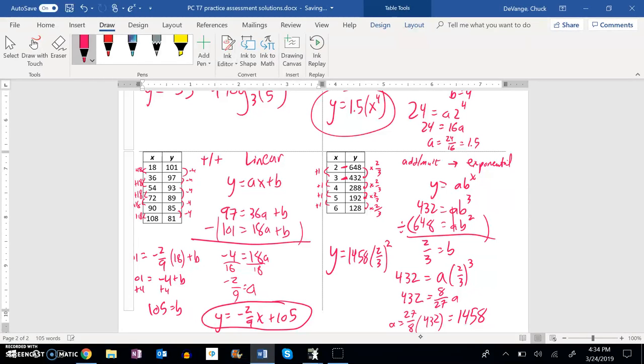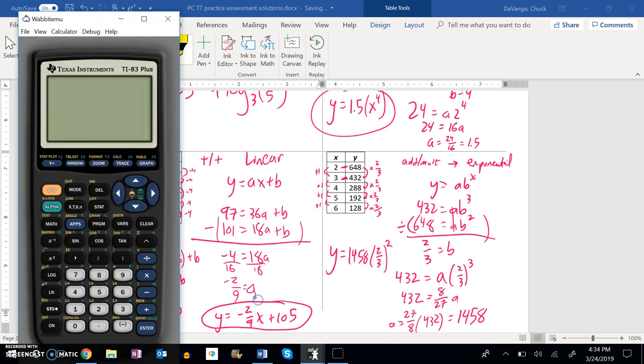All right, let me check this on the calculator. So I have 1458 and then two-thirds to the power of x. I wrote a two, it should be an x.